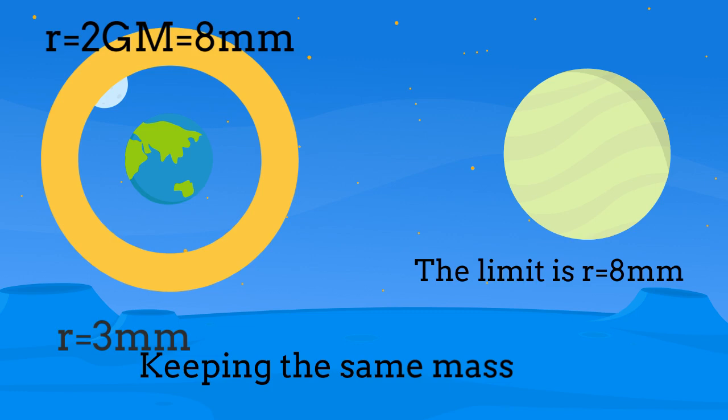But how can we know this? What is the key concept? The key concept is the event horizon. If we calculate the event horizon for the Earth, we would obtain around 8 mm. So think on the event horizon only, guys.